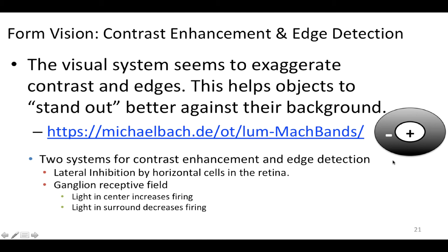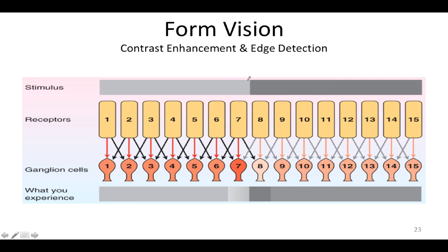That allows an object moving across to at first inhibit this neuron, and then when the light object enters the middle, it'll excite this neuron. So it allows this neuron to distinguish between an object that's in the center and one that's out along the edge. Let's take a look at how lateral inhibition works — we have a lighter area and a darker area with a transition edge between the two.